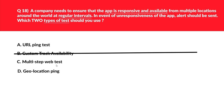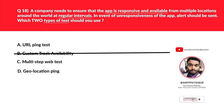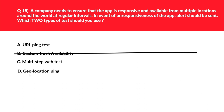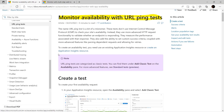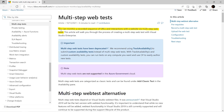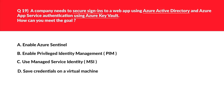Option C, multi-step web test, is a recording of a sequence of web requests, which ensures the application is responsive at regular intervals — another potential answer. Option D, geolocation ping, doesn't exist and is a distractor. Per official documentation, URL ping test monitors availability as a basic test, and multi-step web test monitors a recorded sequence of URL interactions with the website. We log both A and C as correct answers.